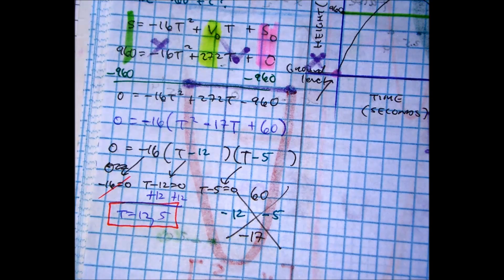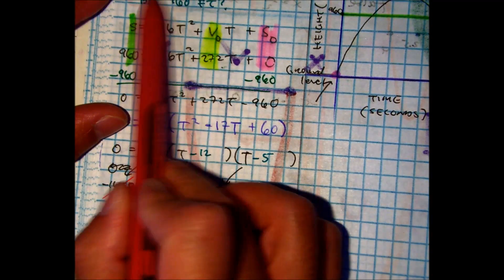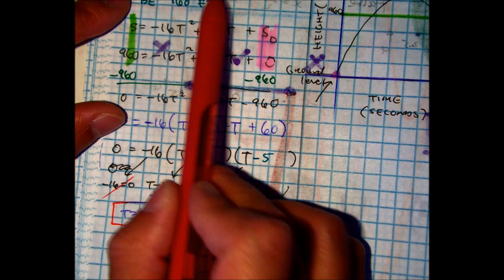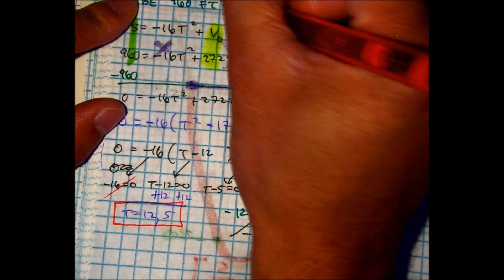So to answer the question, when, what is T, when will the projectile's height be above ground, the 960 feet, that'll be when time is 5 and 12 seconds.